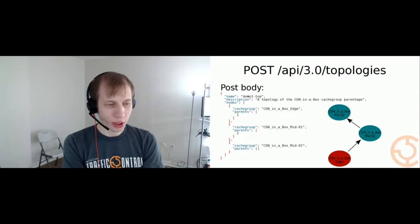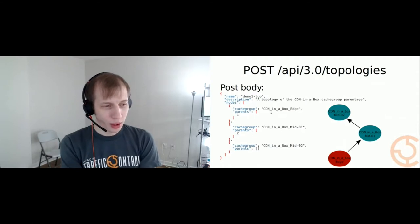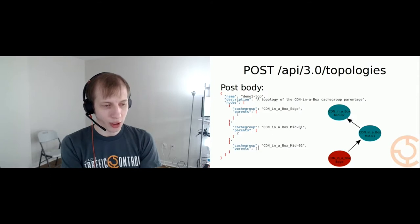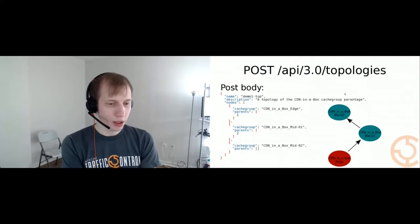As far as the actual structure when you're creating a topology, it's zero-indexed. So when it says the parent is one, that refers to mid-zero-one. When it says the parent of mid-zero-one is two, then that's mid-zero-two. Pretty self-explanatory. Notice that you're not going to get any ID in the response — the name is the primary key.